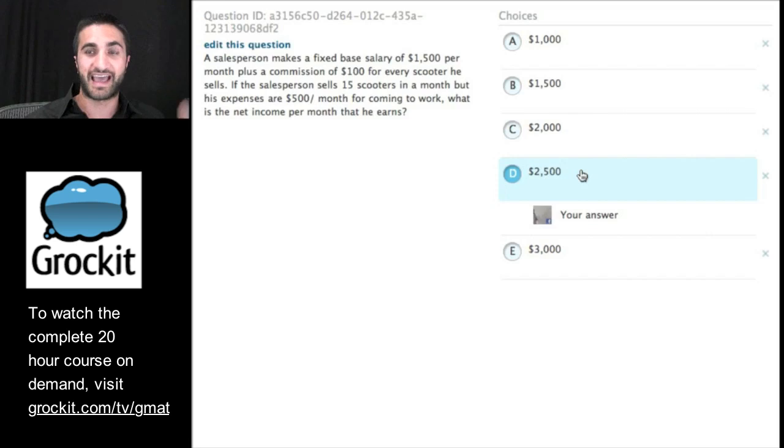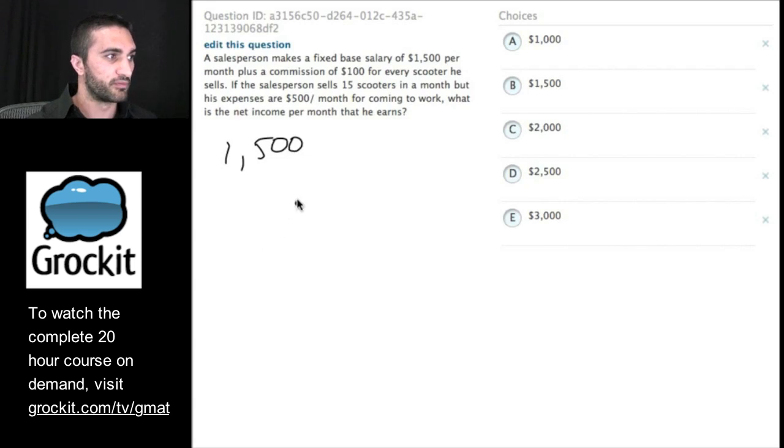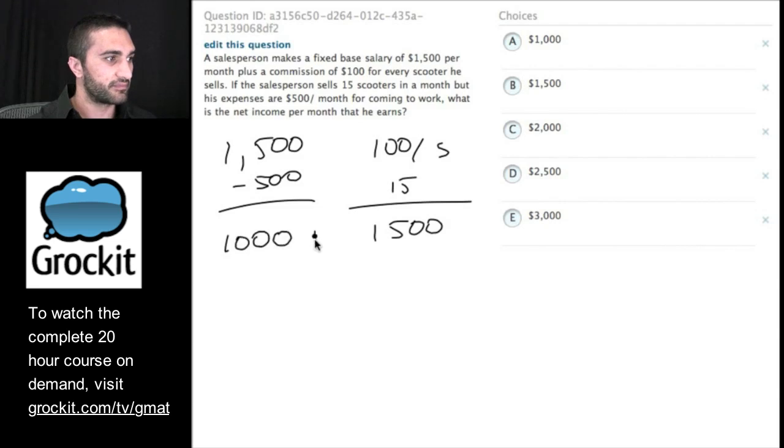This question was the question that we just looked at, the math that we just did. It was 15 times 100, and it was 1,500 minus 500, and it was 1,500 plus 1,000. Pretty simple arithmetic. This question is actually asking us the exact same thing. But it doesn't look like it, does it? A salesperson makes a fixed base salary of 1,500 per month plus a commission of $100 per scooter he sells. If the salesperson sells 15 scooters in a month, but his expenses are $500 a month for coming to work, let's take that out of his base salary. We get what is his net income per month that he earns. And 1,000 plus 1,500 equals 2,500.